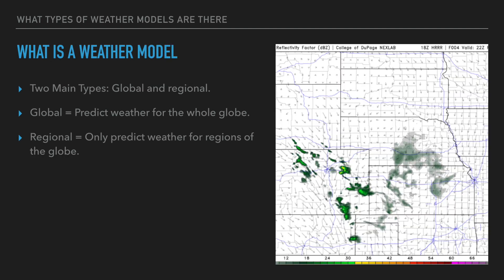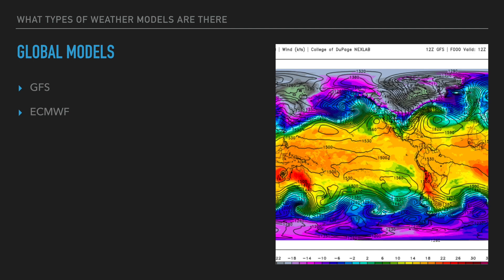There are two main types of models we will be delving into: global models and regional models. Global models predict weather for the whole globe. Regional models only predict weather for regions of the globe — just very localized sections. Examples of global models would be the GFS, the Euro, ECMWF. Those are global models — they model weather patterns throughout the entire globe. Regional models would be like the NAM and the HRRR. The NAM is only really for North America; HRRR same thing. They're American models.